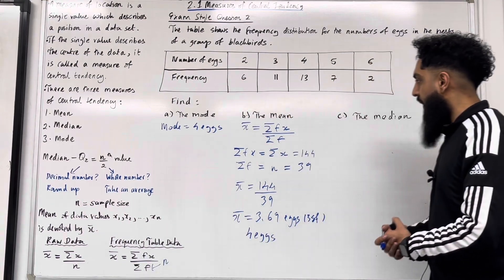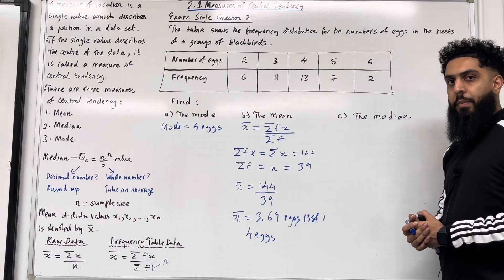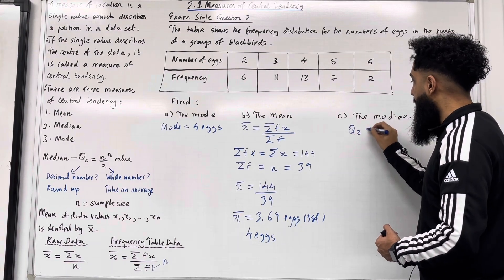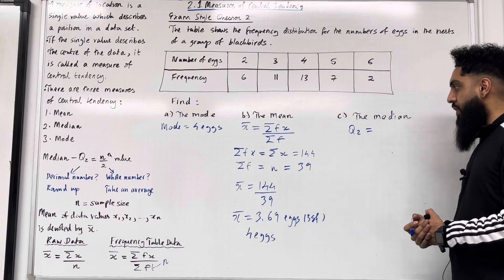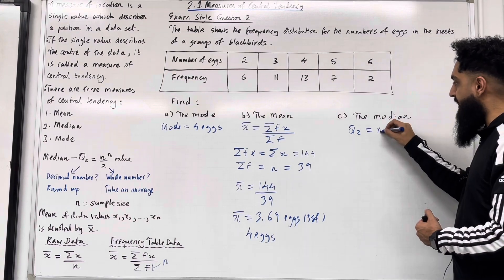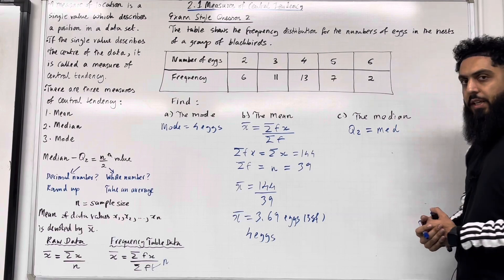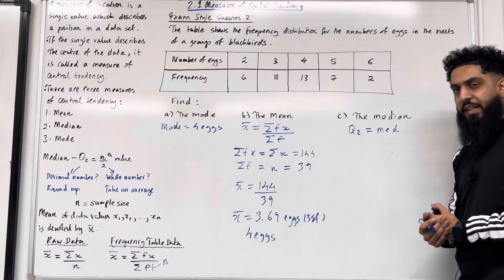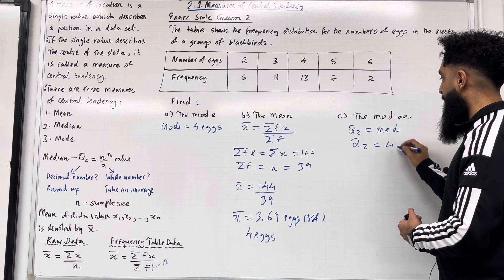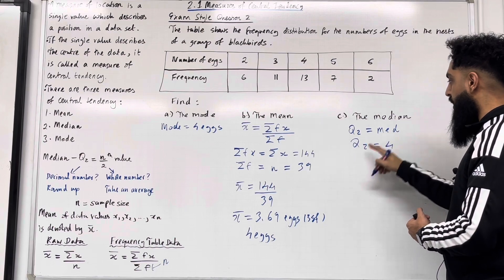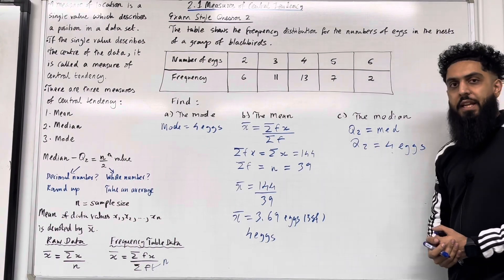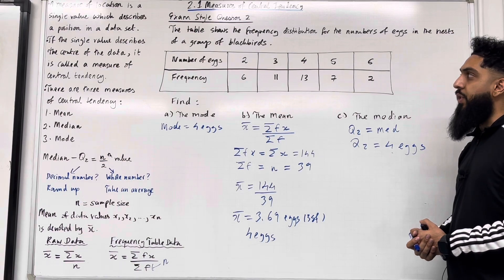Let's move on to part C. We want to calculate the median, represented by Q2. In the Classwiz calculator, Q2 technically represents MED, shorthand for median. From the calculator, MED is equal to 4, so the median Q2 is equal to 4 eggs. That completes exam style question 2.